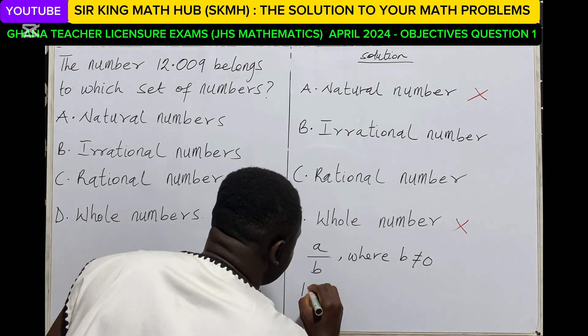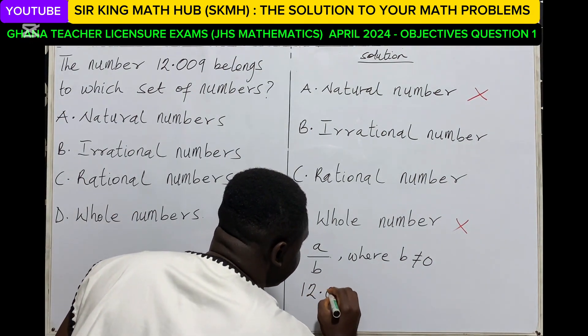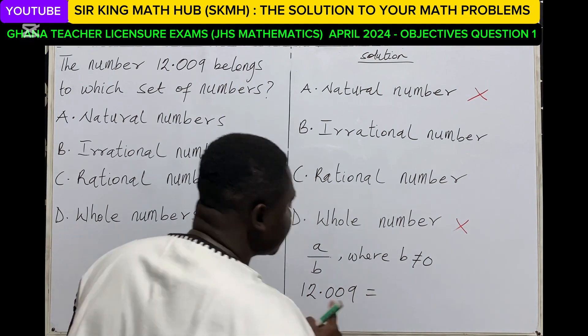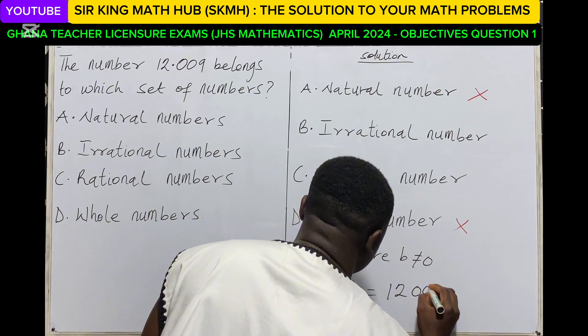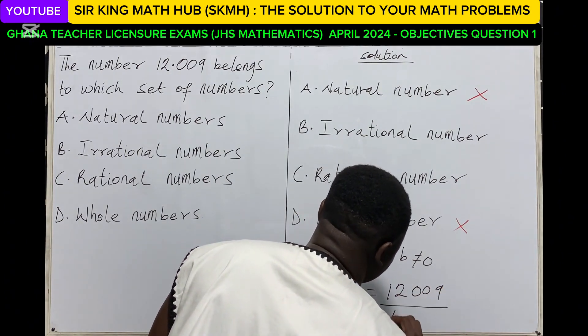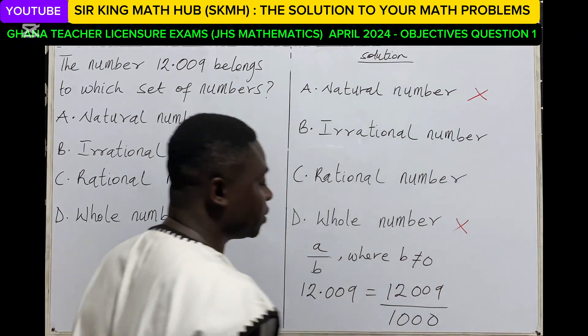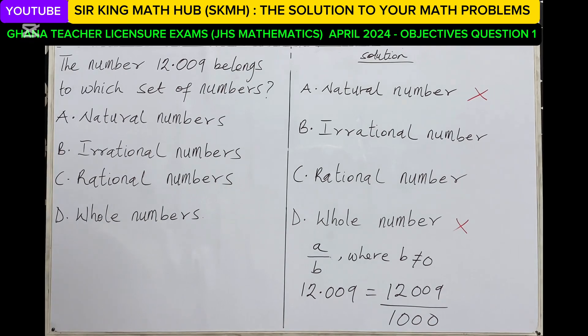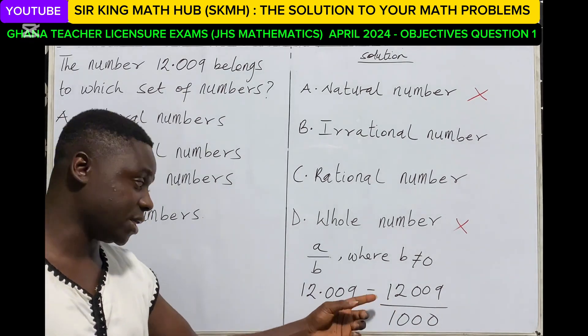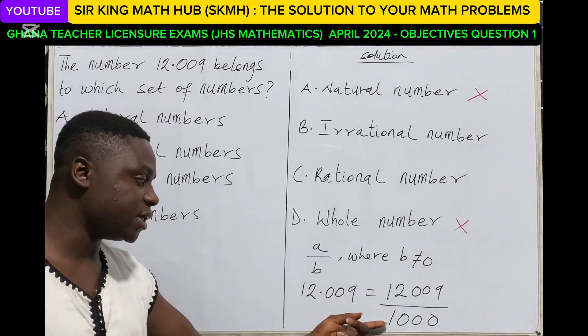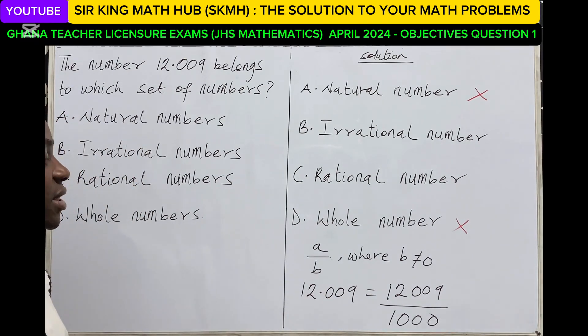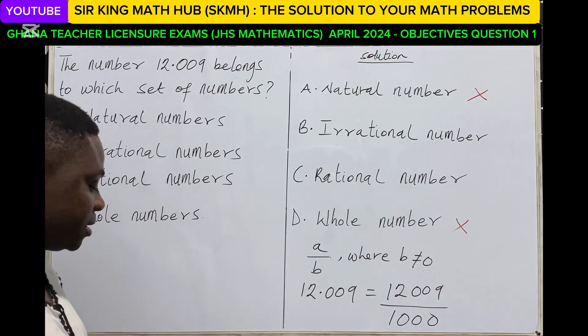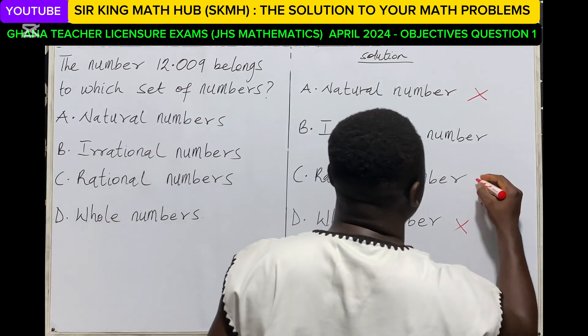So let's see whether we can write 12.009 in terms of a common fraction, that is A over B. So we have 12.009. This can be written as a common fraction. It could be written as 12.009 divided by 1000. So because it can be written as a common fraction, where the denominator is not equal to zero, it means that the number 12.009 is a rational number.